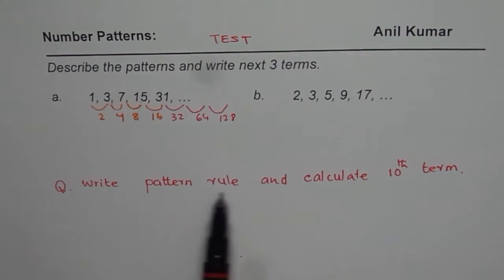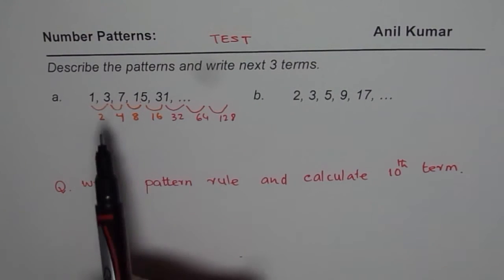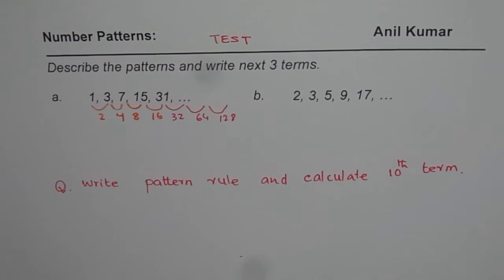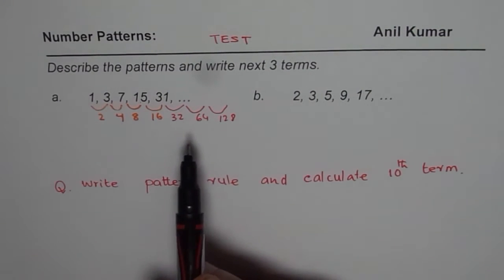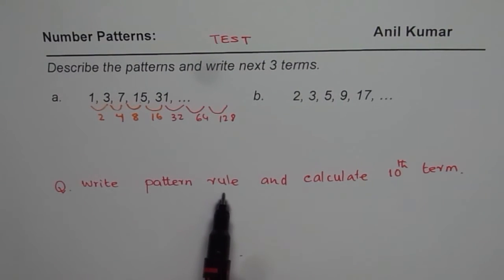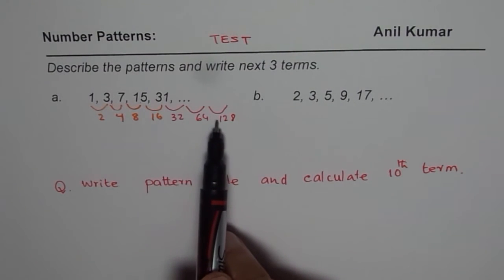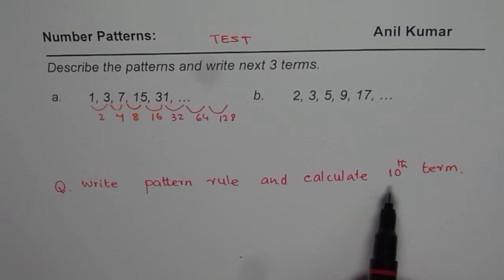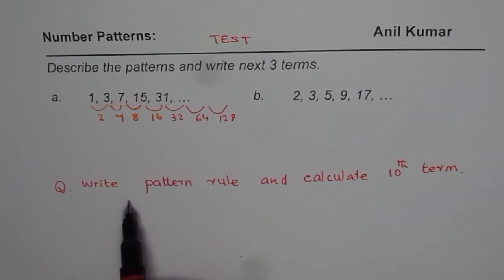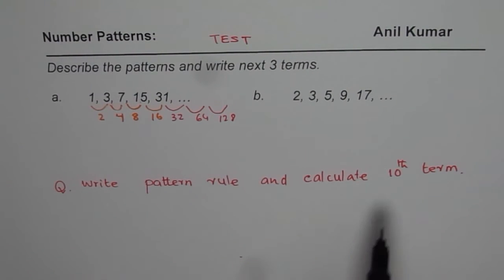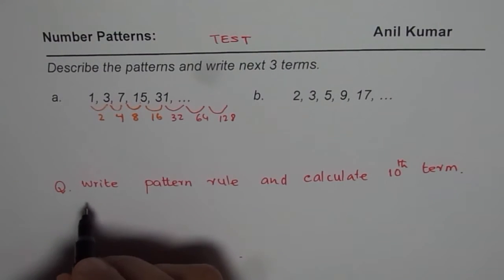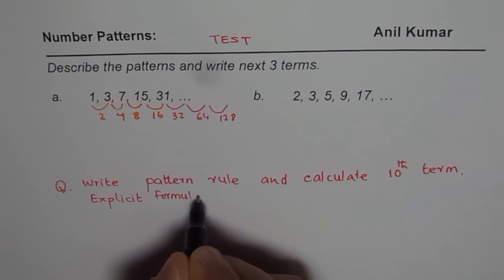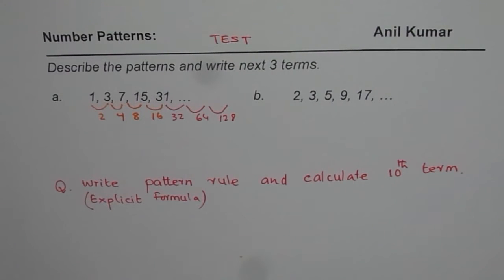Now the question really is to write a pattern rule so that you could get the 10th term. You already have quite a few terms: 1, 2, 3, 4, 5, 6, 7, 8 — you go two more steps and you get the 10th term. But the idea here is to write down a pattern rule, use that rule to find the 10th term, rather than by addition. Think about the 100th term — you need a formula. So I am looking for an explicit formula, which will be your pattern rule, to find the 10th term.